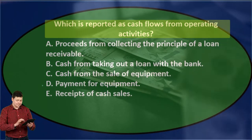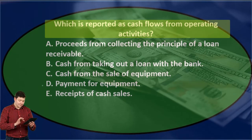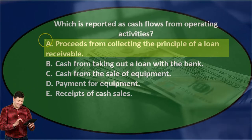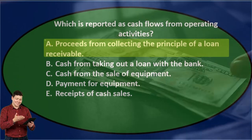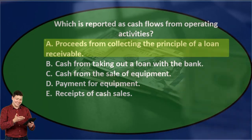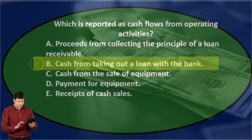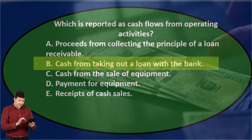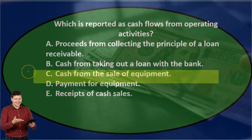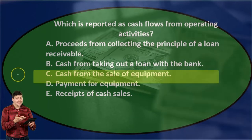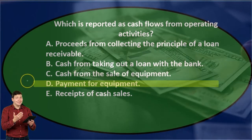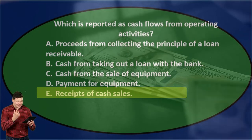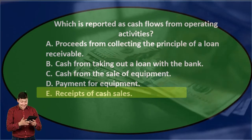Next question: which is reported on the cash flows from operating activities? A) proceeds from collecting the principal of a loan receivable, B) cash from taking out a loan with the bank, C) cash from the sale of equipment, D) payment for equipment, or E) receipts of cash sales.